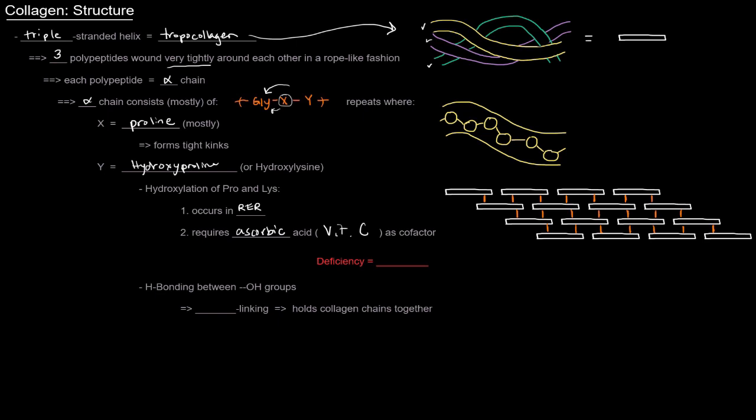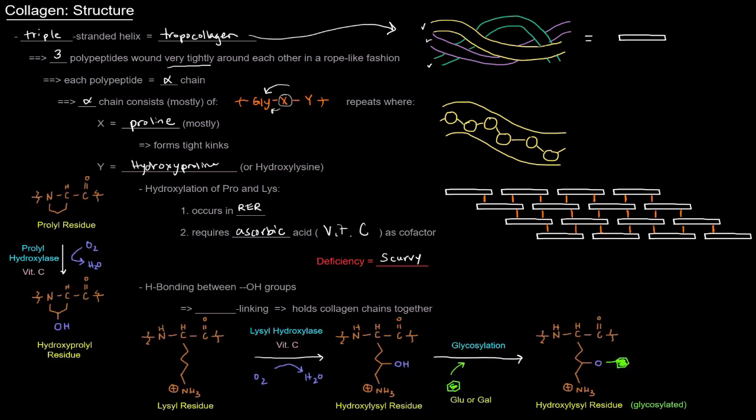And a deficiency in that vitamin C actually causes a disease called scurvy. And I'll talk a little bit more about that definitely later in the series. And I'll mention it here a little bit. But what does the hydroxylation of those residues look like? It looks like this. So here we have a proline residue or a proleal residue, part of a polypeptide chain. So proleal hydroxylase with using vitamin C as a cofactor will go through and attach a hydroxyl group to the proline creating the hydroxyproline or hydroxyproleal residue.